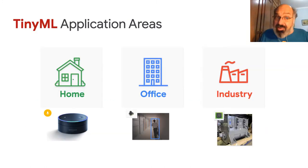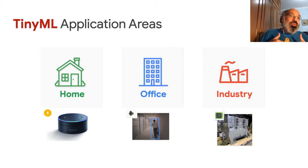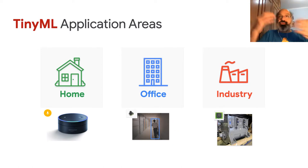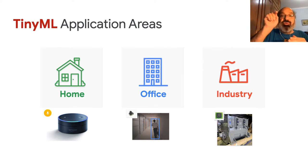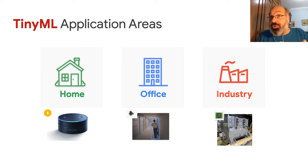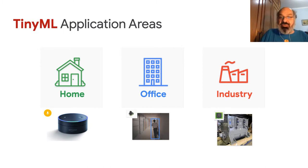Besides all the challenges with such tiny devices, it's possible to find TinyML applications everywhere nowadays — like personal assistants in our homes such as Alexa or Hey Google, to turn lights on and off automatically, to see if a person is present, to call elevators using your voice, using both audio and vision algorithms. In industry, anomaly detection can warn us if a machine is running with a problem.